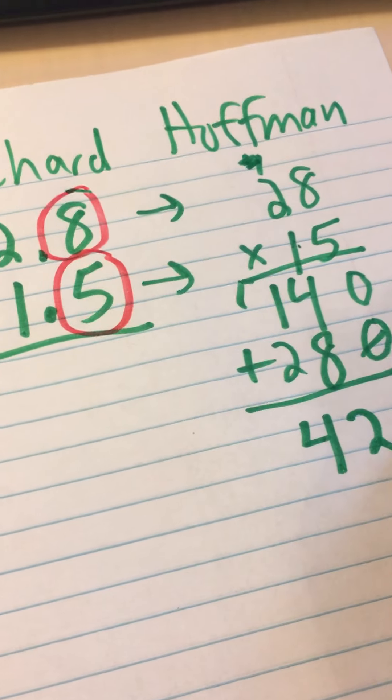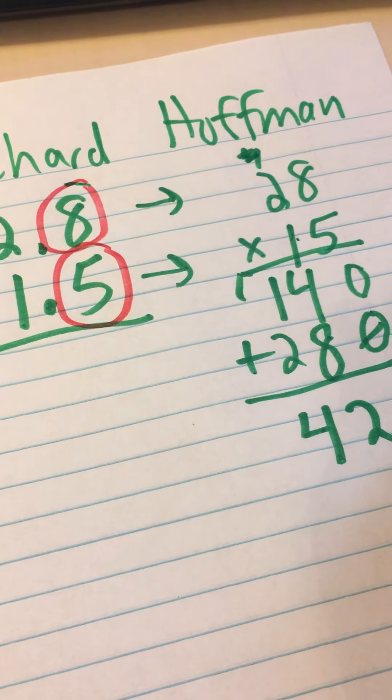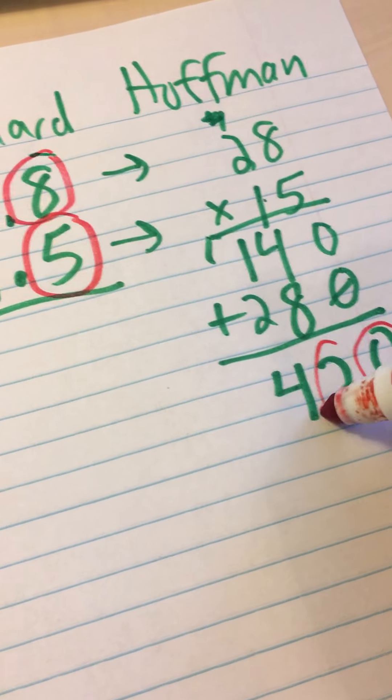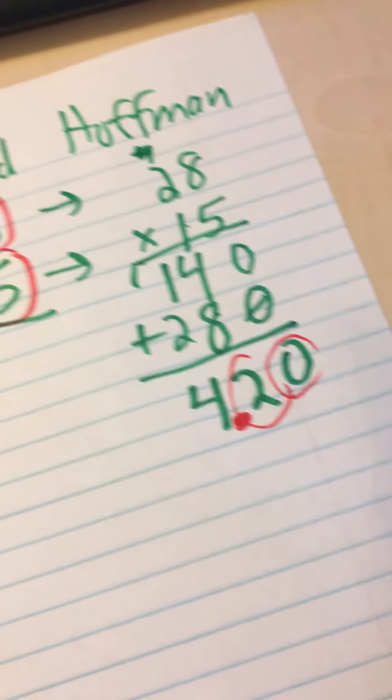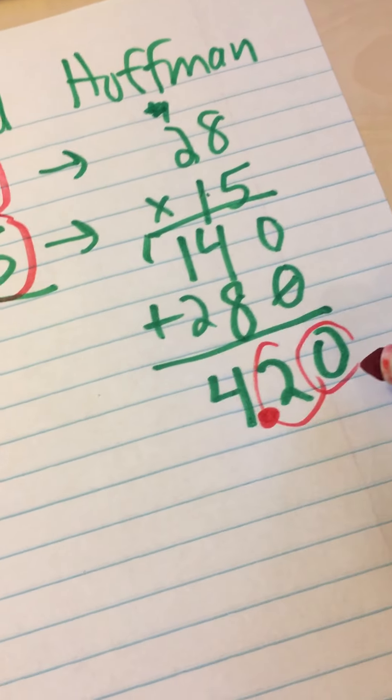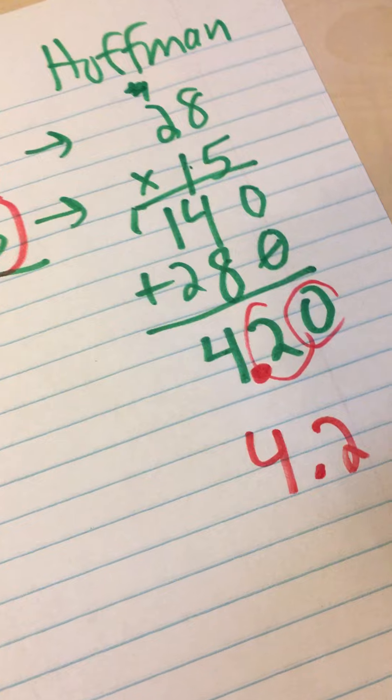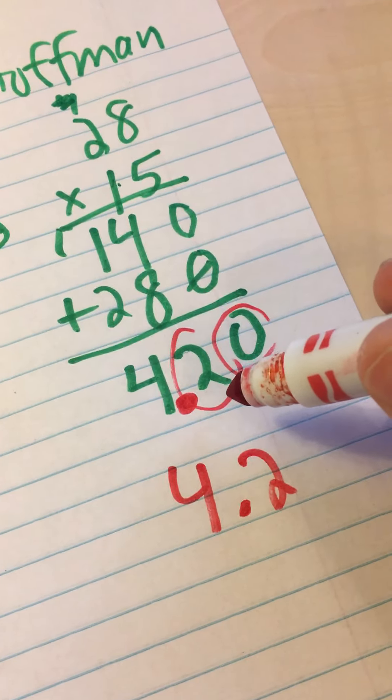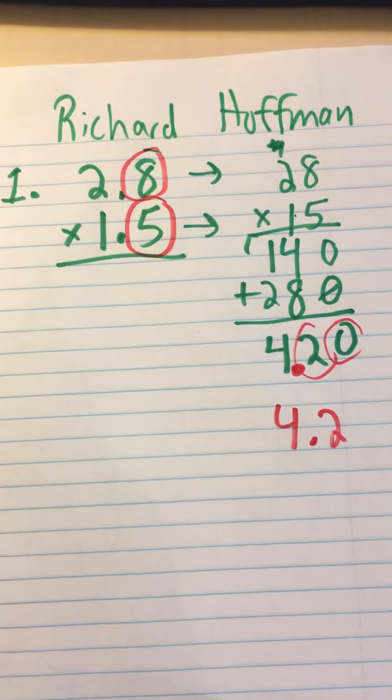Then I will also show two decimal place value positions. One, two, the decimal goes here. So the answer is four and twenty hundredths. Or you could also say four and two tenths. Ta-da. Show the whole page and you're done.